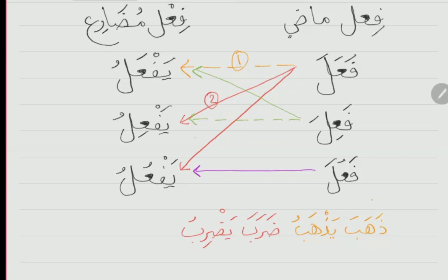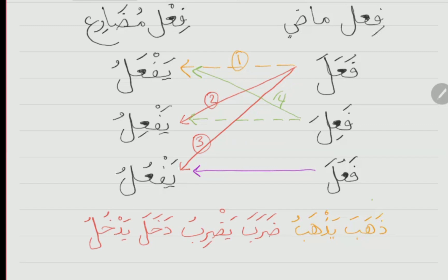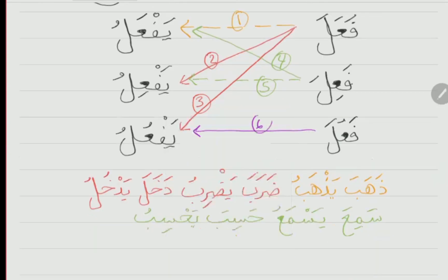Number three, fa'ala yaf'ulu — like dakhala yadkhulu. Number four, fa'ila yaf'alu — like sami'a yasma'u and alima ya'lamu. Number five, fa'ila yaf'ilu — like hasiba yahsibu. Number six, fa'ula yaf'ulu — like hasuna yahsunu, qabuha yaqbuhu, and karuma yakrumu.